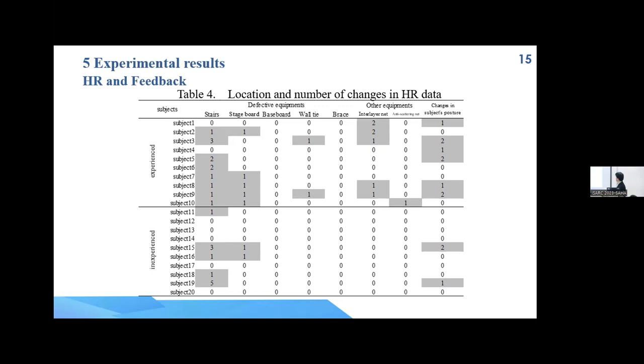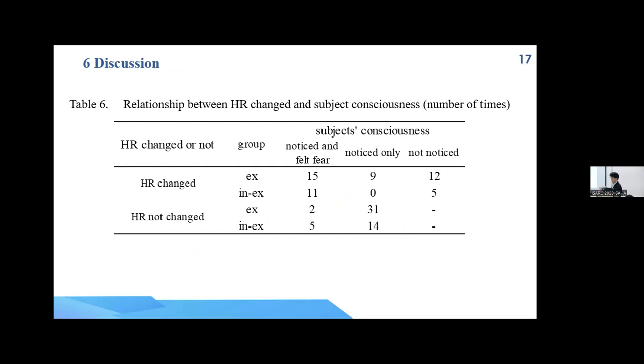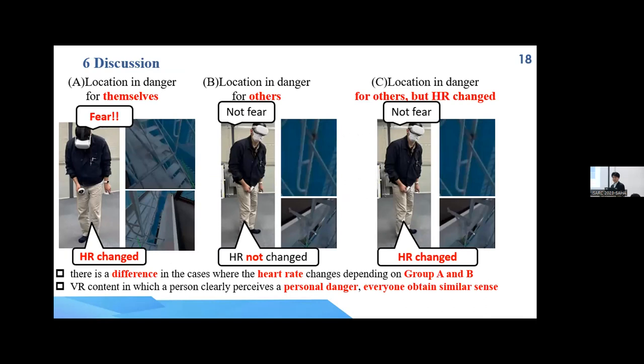And this is a list of where and how many times heart rate changes significantly. Both feedback results and heart rate results looked like more response in the experience group. And also, not in this paper, statistical analysis Wilcoxon rank sum test was performed, and there are differences between two groups. And there are lists, cross-tabulated lists of interview results and heart rate change results.